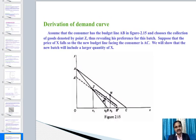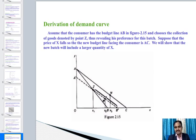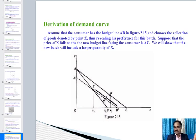To derive the demand curve: assume the consumer has budget line AB and chooses collection z, revealing preference for that bundle. If the price of good x falls, the new budget line becomes AC, shifting to the right. This new budget line will include a larger quantity of x while the quantity of y remains constant — demonstrating the inverse price-quantity relationship used to derive the demand curve.